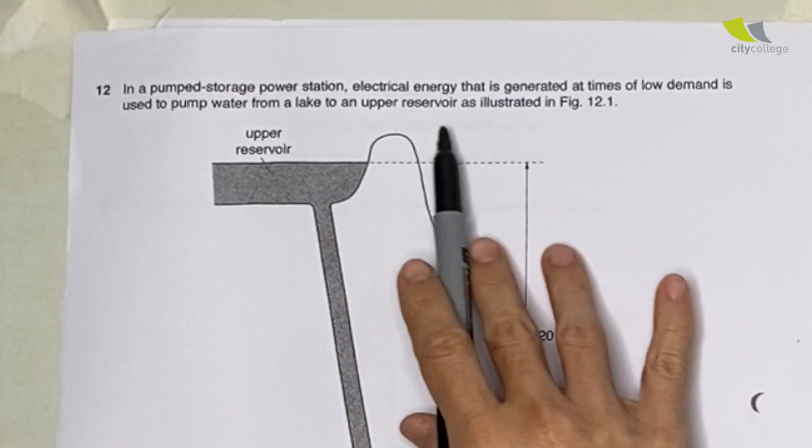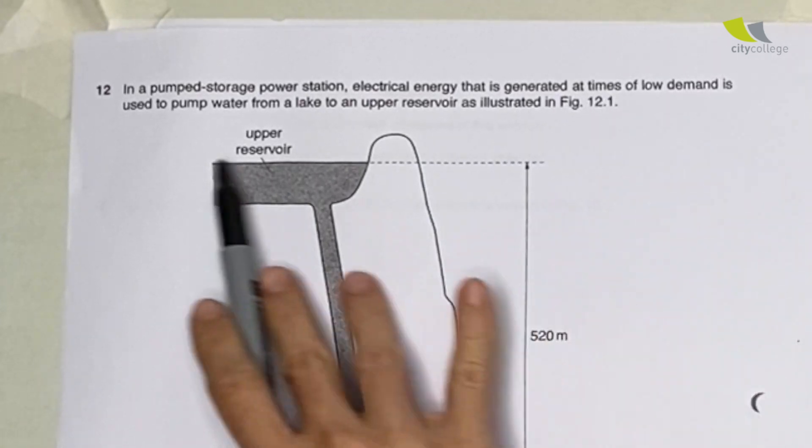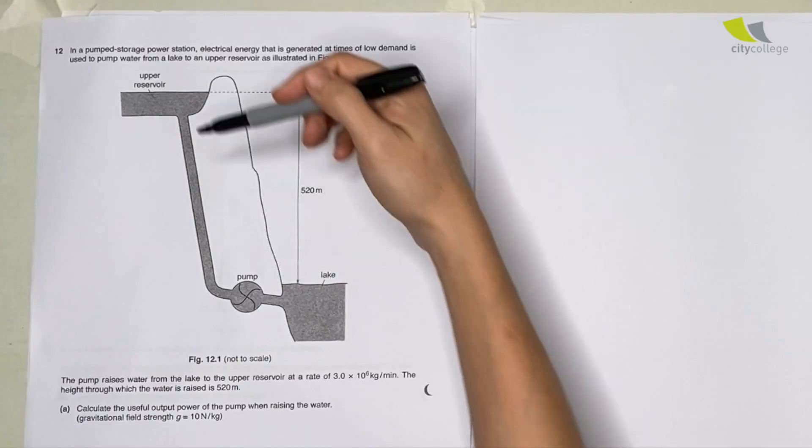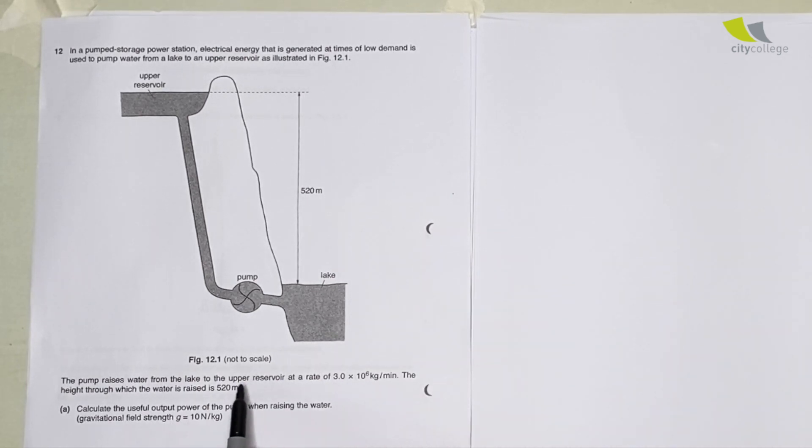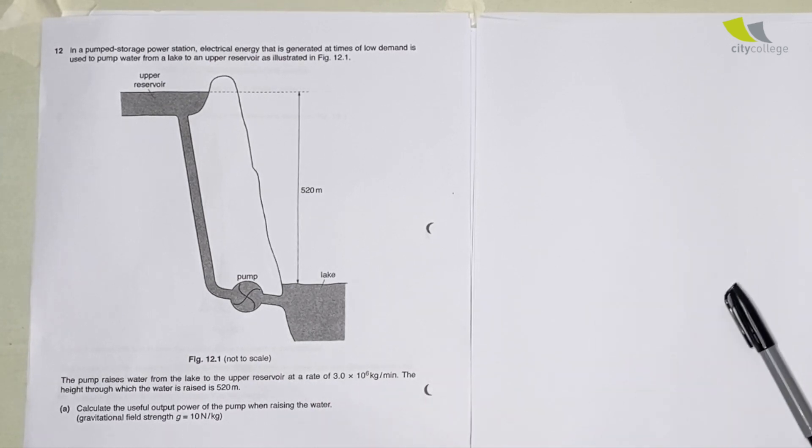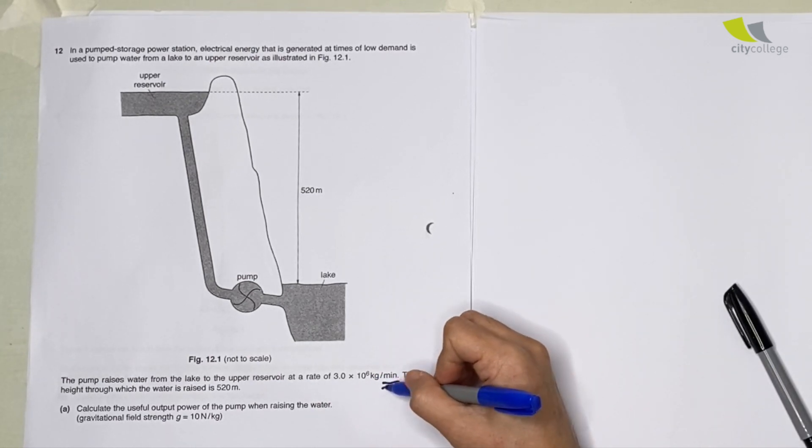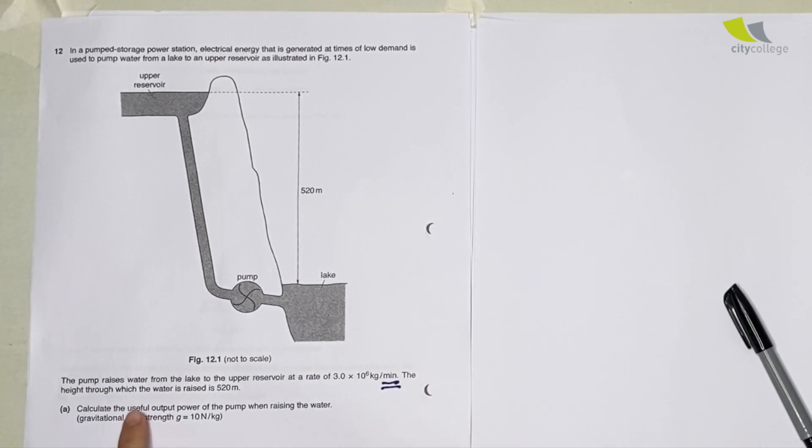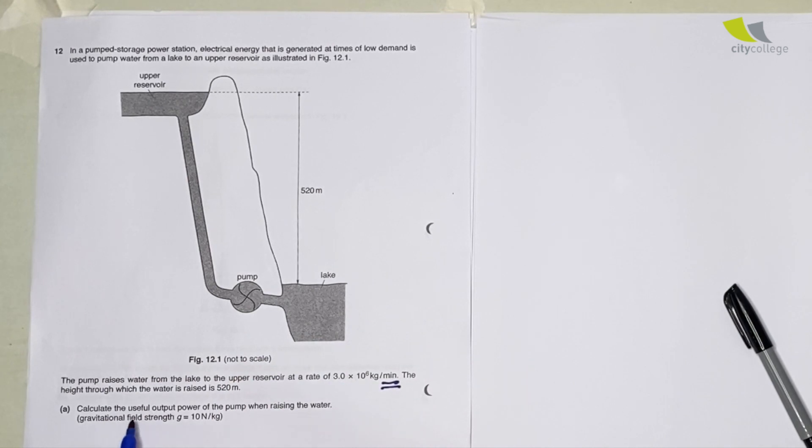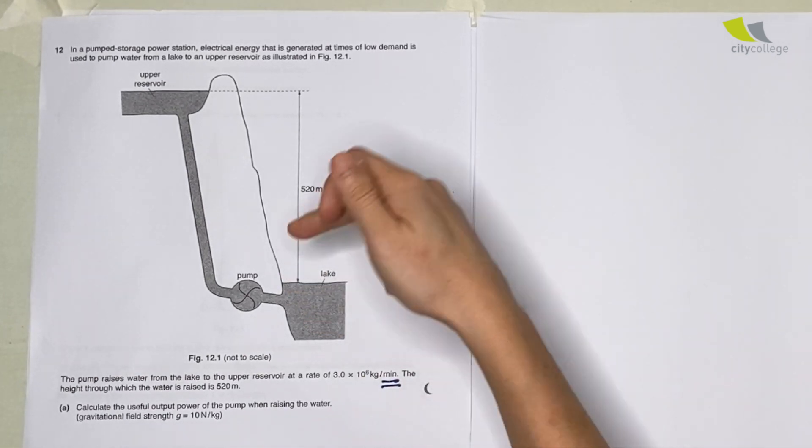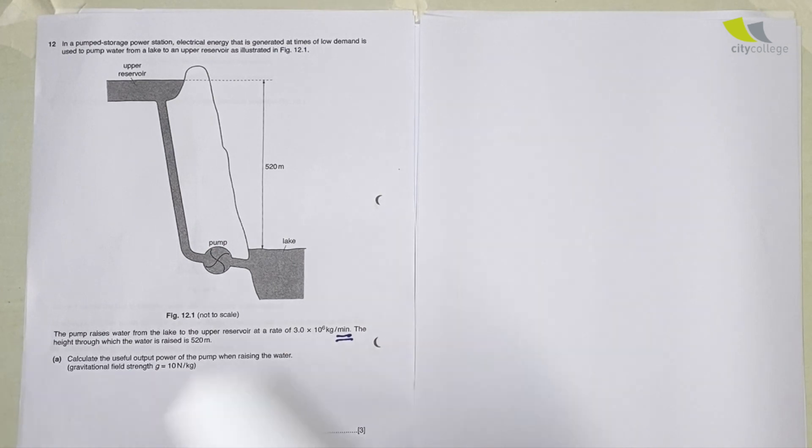Pump storage power station: electrical energy generated at times of low demand is used to pump water from a lake to upper reservoir. Pump raises water to the lake at a rate of 3.0 times 10 to the power 6 kilogram per minute. So you see, here they set a trap. The height through which the water is raised is 250 meters. Calculate the useful output power of the pump when raising the water.